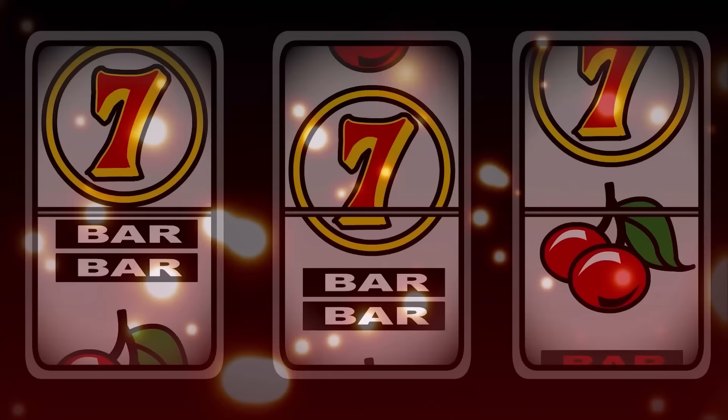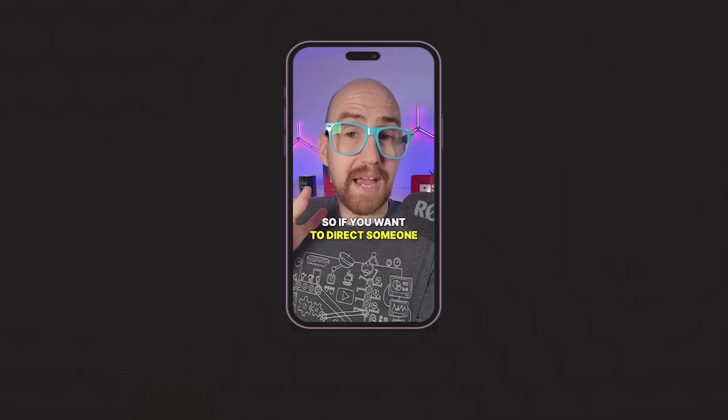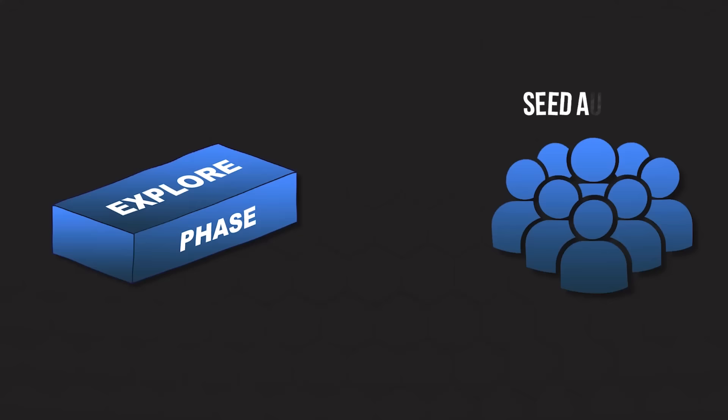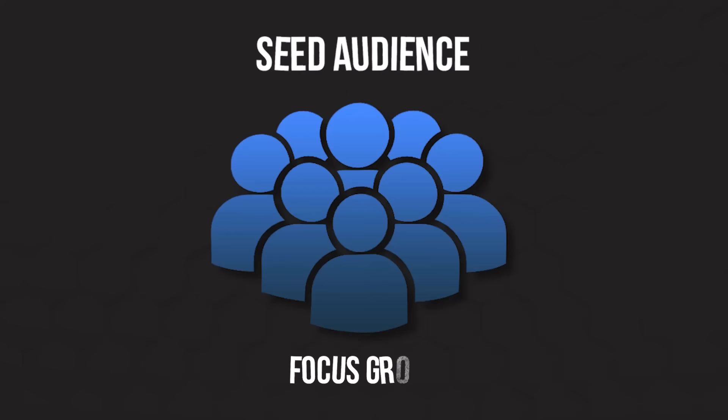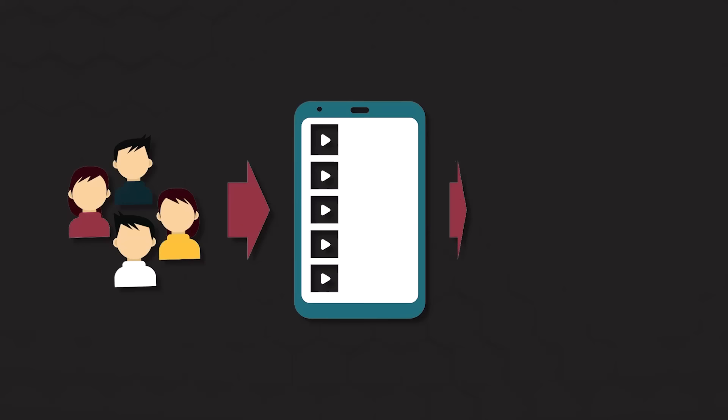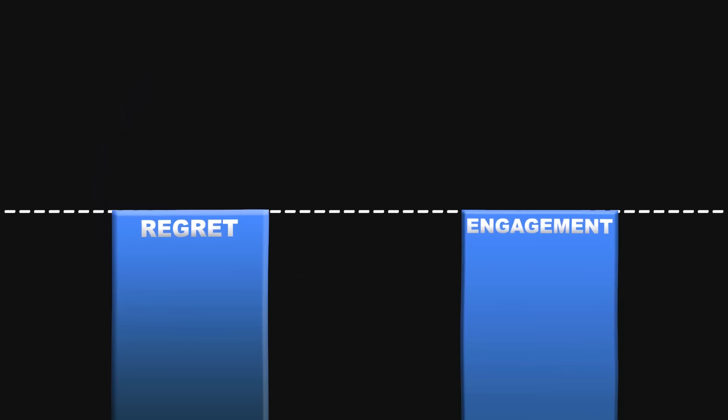The Reddit post explains the explore and exploit stages as a multi-armed bandit system — think slot machines at a casino. When you first publish a Short, it enters an explore phase where it gets sent out to a small random seed audience. This seed audience acts like a focus group to test if your content resonates. The algorithm tries to find viewers that might be a good match based on factors like your niche and their watch history. But here's the catch — that seed audience may not represent your actual target audience.